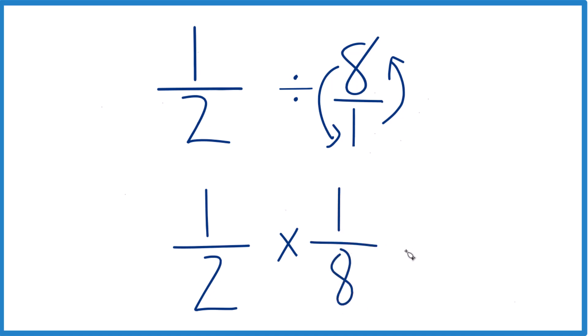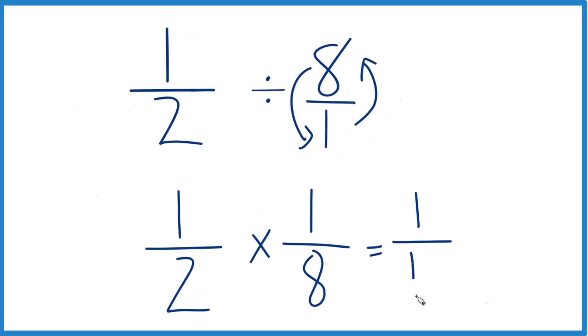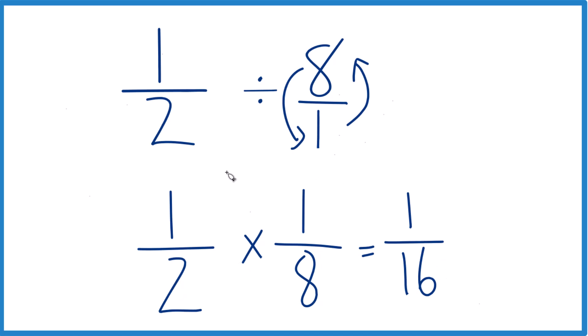And that makes it easy because with these fractions here, when we multiply, one times one is one, and two times eight is 16. So we just multiply across, and we end up with one-half divided by eight.